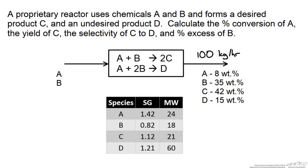This will simplify our problem since we now have all the information necessary for our outlet stream. Our only unknowns are the inlet flow rates — the flow of A and flow of B entering the reactor. Since we are working with reactions, the only way to do these balances is to work on a mole basis. So we define some unknown molar flow rate of A and some unknown molar flow rate of B into our reactor. We have two unknowns.